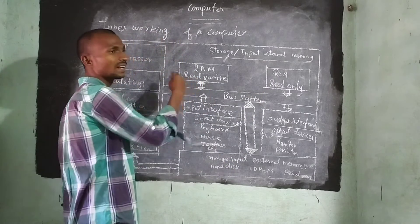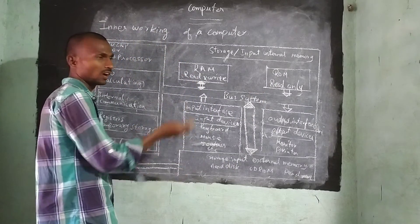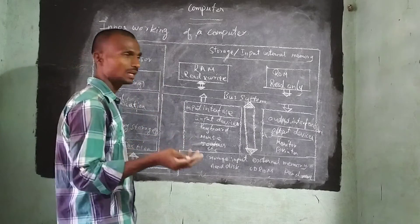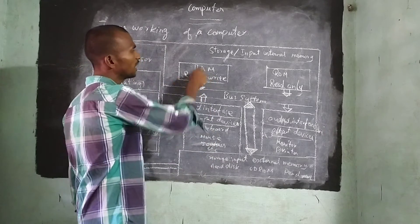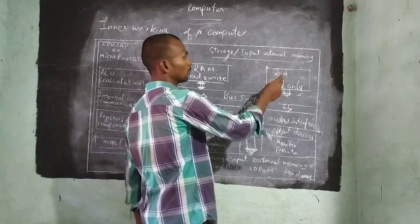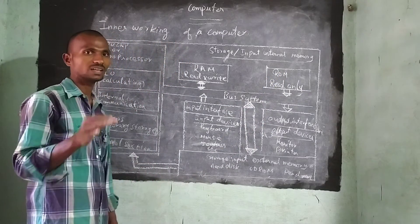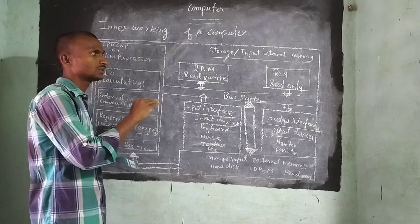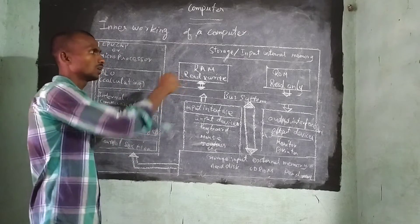RAM. It is the read and write. We can read at the same time we can write. After reading, if we need to make any modification means we can do in RAM. But ROM is the read only memory. Read only memory means only we can read. We cannot change anything in ROM.